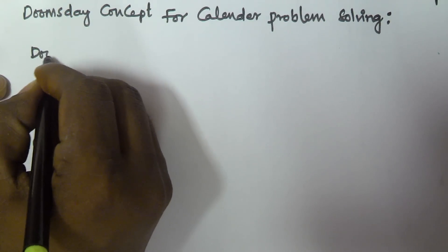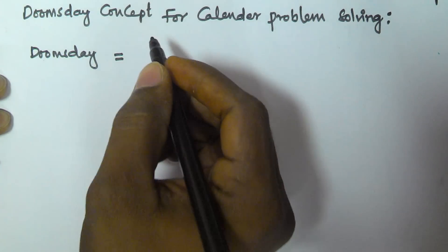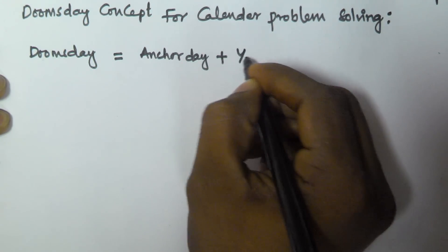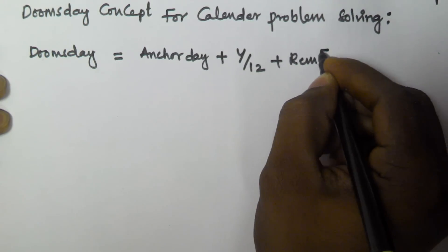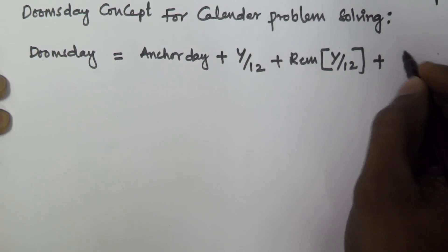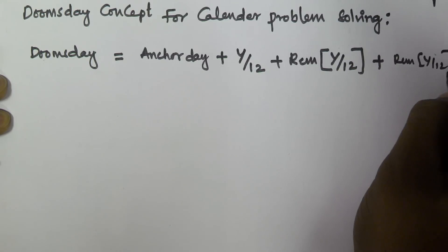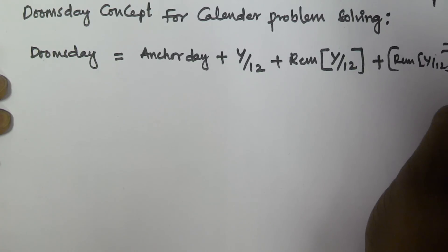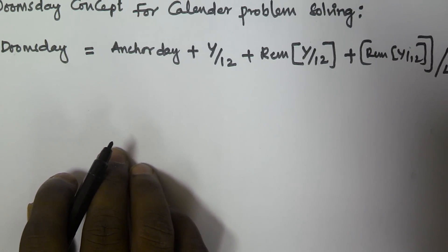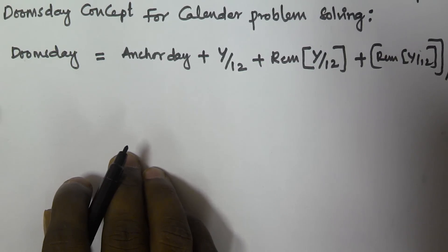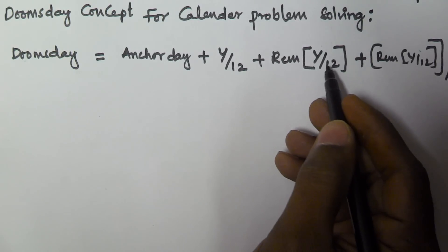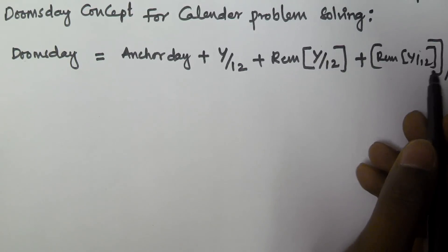Doomsday is equal to Anchor Day plus year by 12, plus remainder of year by 12, and then remainder of year by 12 divided by 4.